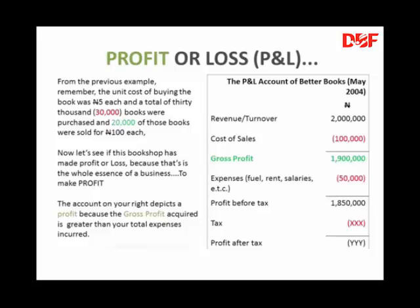Just knowing the cost of sales alone won't tell you whether your business is actually making a profit or a loss. This is the interpretation: the revenue generated through your operational activities of $2,000,000 minus your cost of sales of $100,000 gives you $1,900,000. So we see that yes, this company actually made a gross profit.